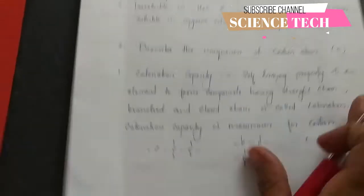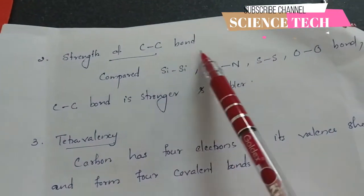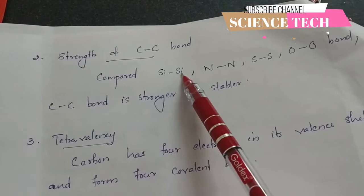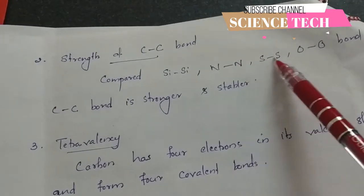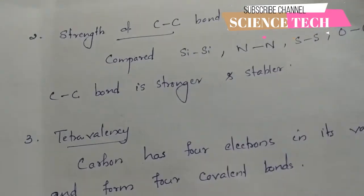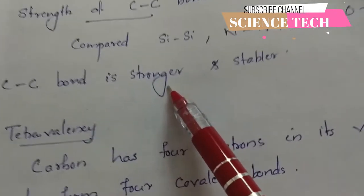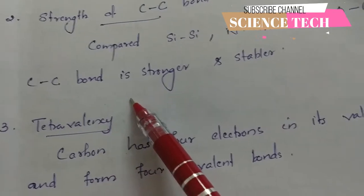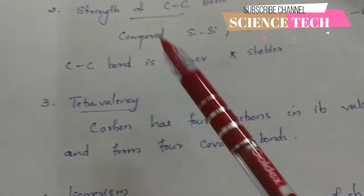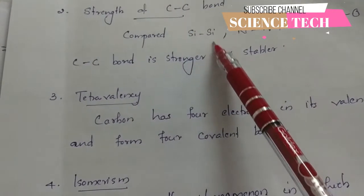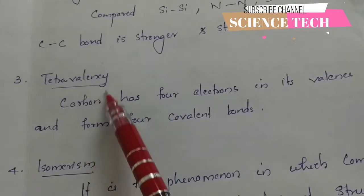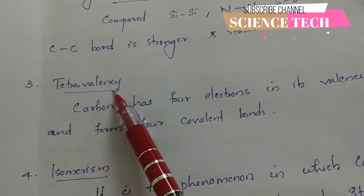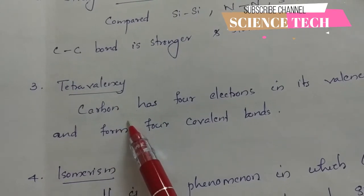The next point is the strength of the carbon-carbon bond. The carbon-carbon bond is stronger and more stable compared to sulfur-sulfur, nitrogen-nitrogen, oxygen-oxygen, and silicon-silicon bonds. This makes carbon unique in its ability to form stable structures.